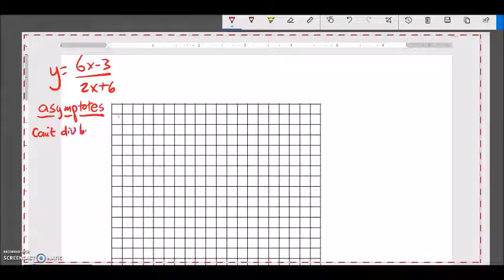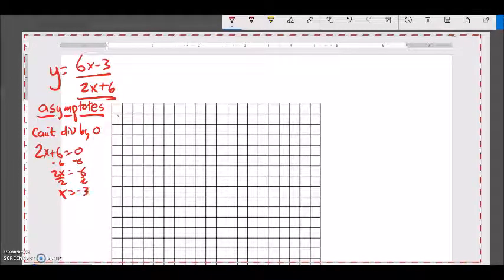So when I would be dividing by zero is when this 2x plus 6 is actually equal to zero. So let me see, 2x plus 6 equals zero, subtract 6 from both sides, negative 6 divide by 2, x is negative 3. So I know I have a vertical asymptote at x equals negative 3.